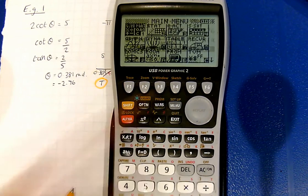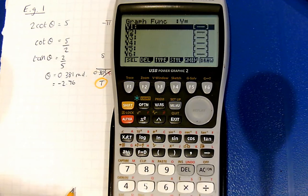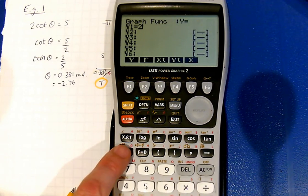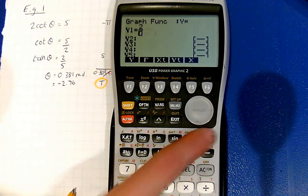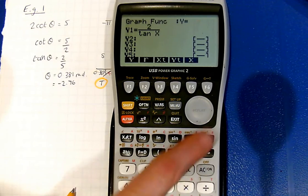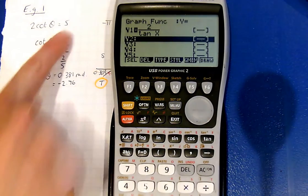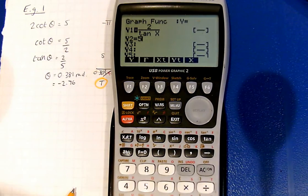The other way to do it is to go to the graph mode. I'm going to type in the graph of 2 cot x. So yet again, we have to do 2 over tan x. And the graph of y equals 5. And we want to see where these intersect.